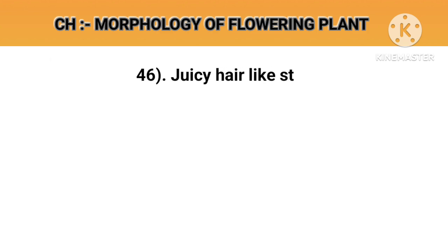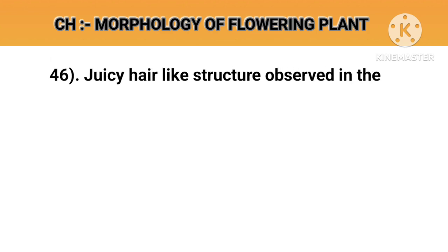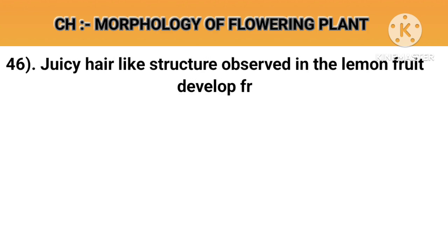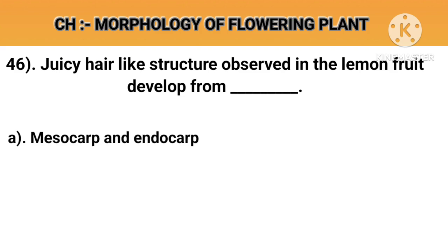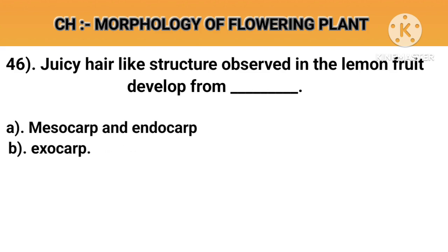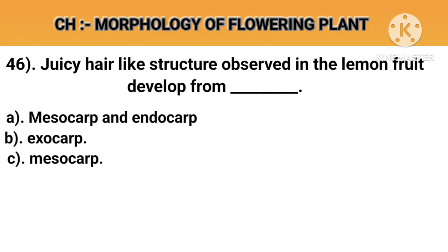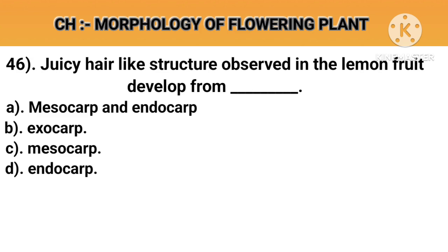Question number 46. Juicy hair-like structures observed in the lemon fruit develop from. Option A: Mesocarp and endocarp. Option B: Exocarp. Option C: Mesocarp. Option D: Endocarp. Answer D: Endocarp.